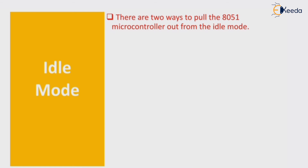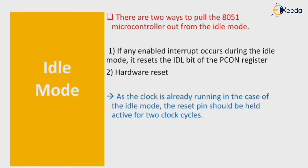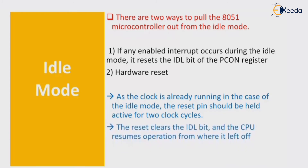There are two ways to pull the 8051 microcontroller out of idle mode. The first is if any enabled interrupt occurs during idle mode — it resets the idle bit of the PCON register. The second is a hardware reset; since the clock is already running in idle mode, the reset pin should be held active for 2 clock cycles. The reset clears the idle bit and the CPU resumes operation from where it left off — there is no restart, it resumes the operation.